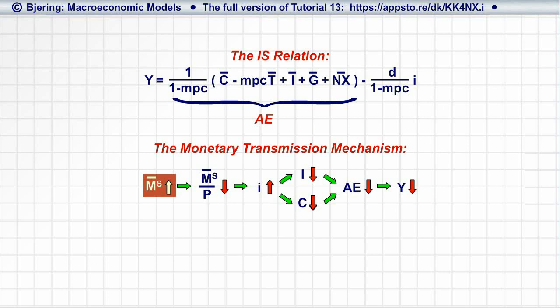However, it appears that the supply of real money balances may also decrease if the price level, P, increases. Thus, assuming that the central bank keeps the nominal money supply, M bar, constant...